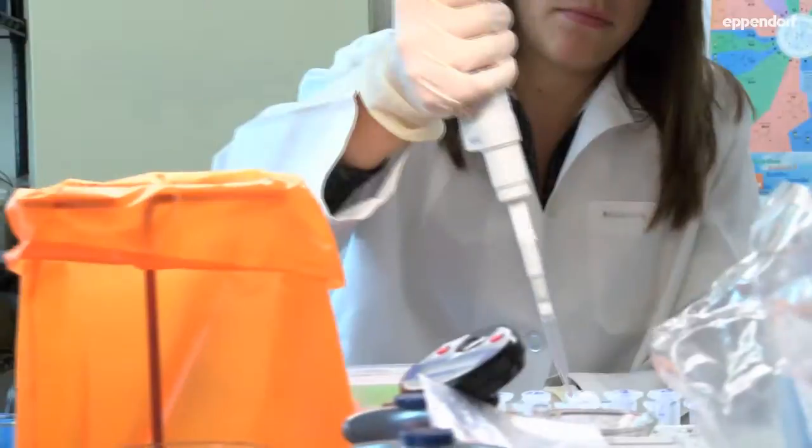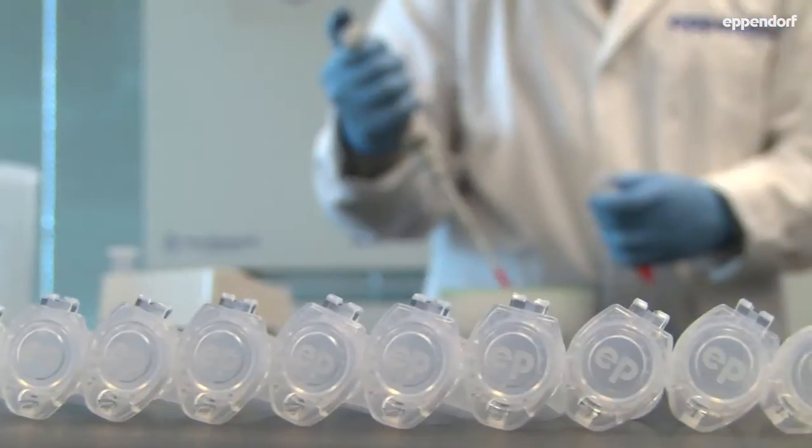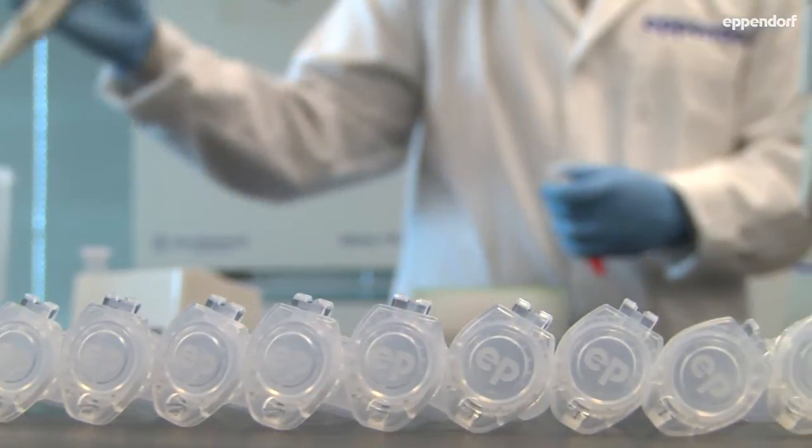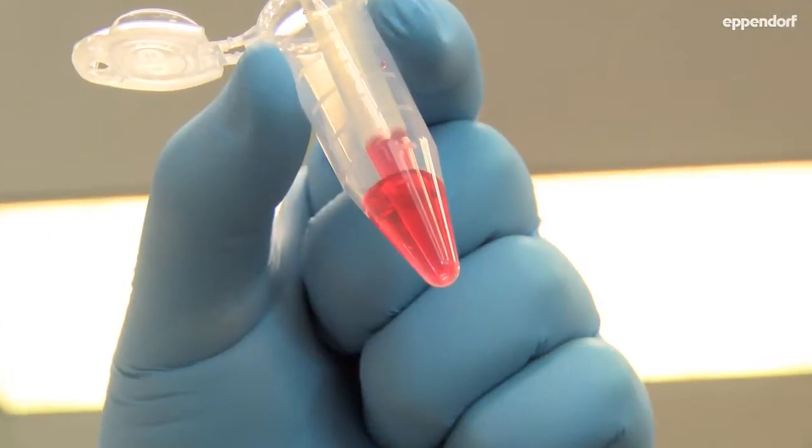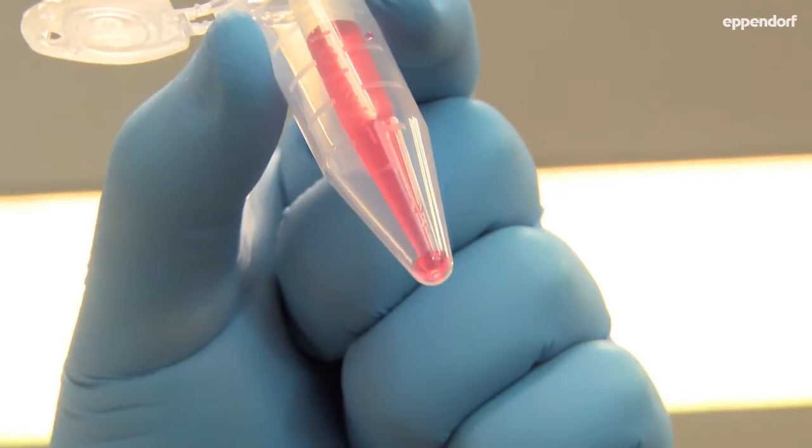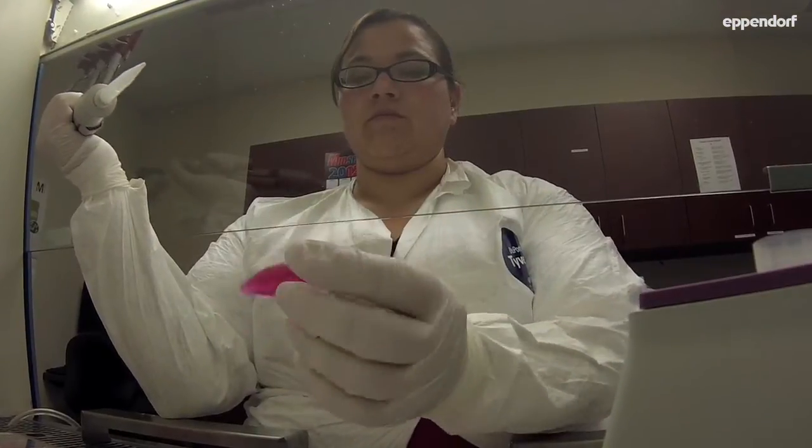For example, if you are in cell culture, you can significantly reduce the contamination risk. If you work with large volumes between 2 and 4, 5ml, you can now have the entire volume in one tube instead of breaking up into individual tubes.